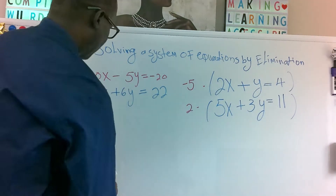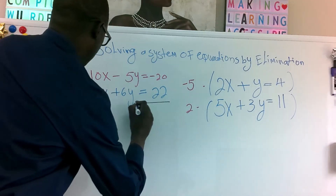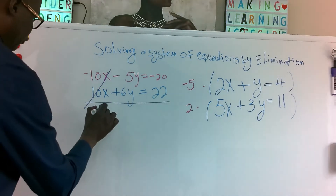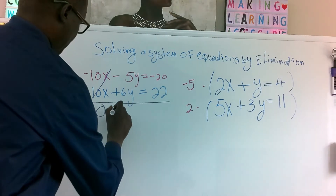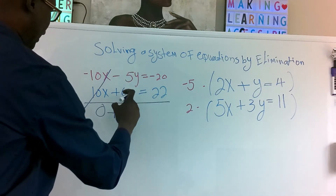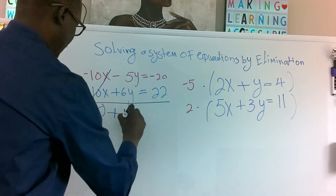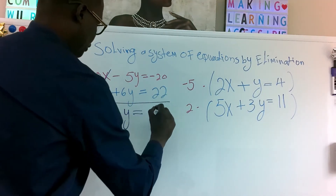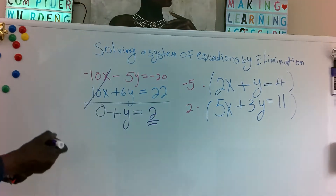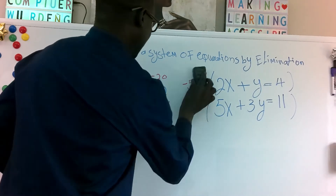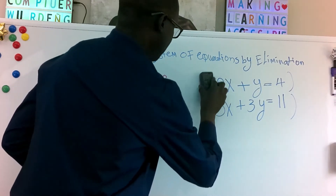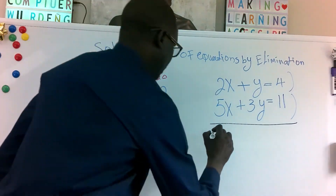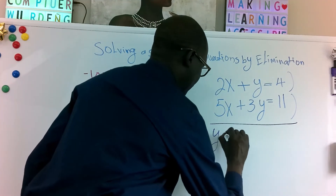Now we add the two equations. The 10x and minus 10x cancel to zero. Minus 5y plus 6y gives y. And minus 20 plus 22 gives 2. So our simplified result is y equals 2.